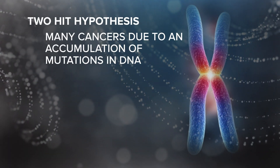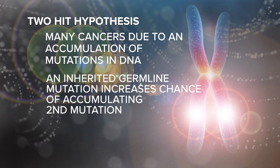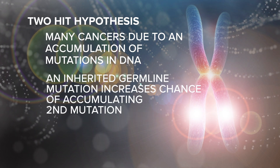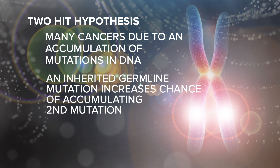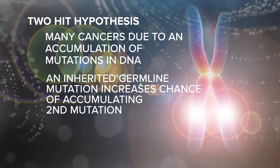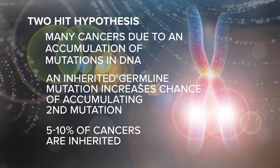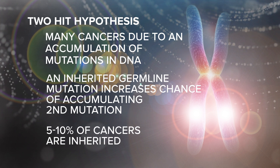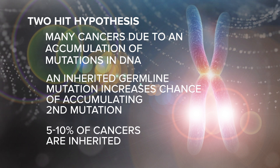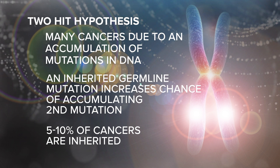Cancer is a group of diseases caused by an accumulation of mutations in a cell's DNA. Many cancers require two mutations in the same gene on each homologue. This means that if a person starts out with an inherited germline mutation in a gene associated with cancer, the probability of accumulating a second mutation is much higher. A mutation in a somatic cell, such as skin or lung, can also be accumulated during a person's lifetime.